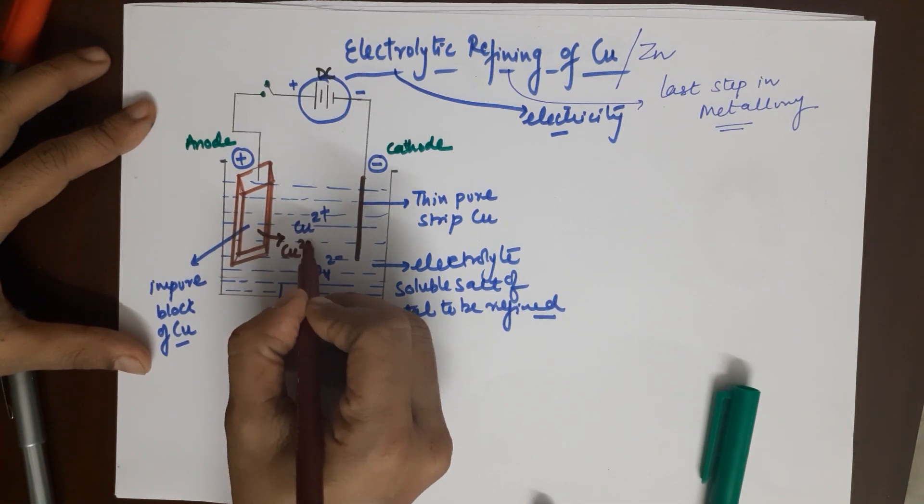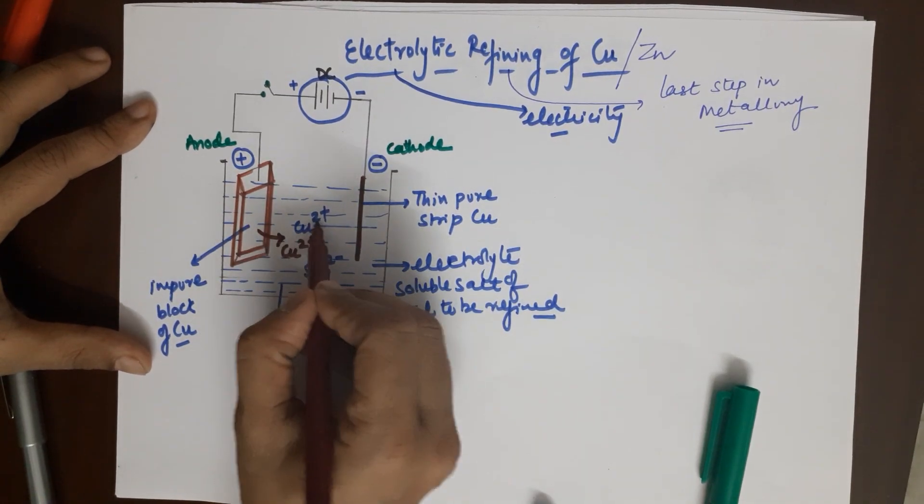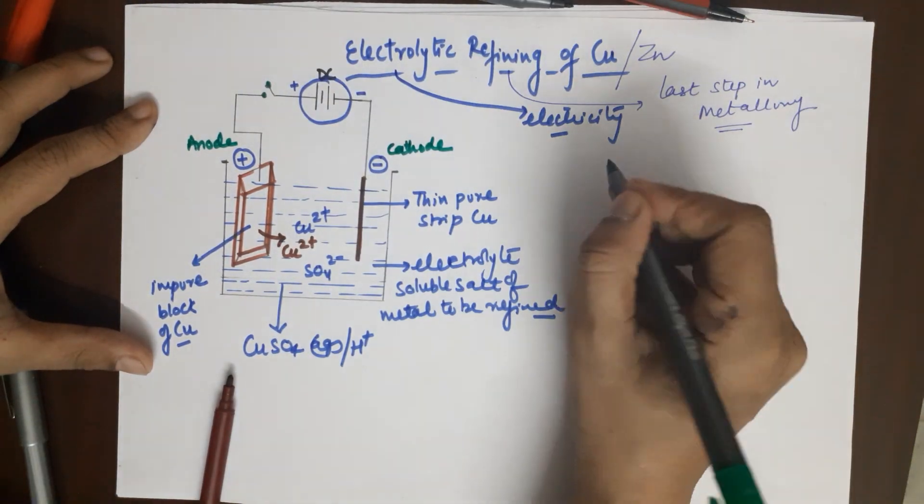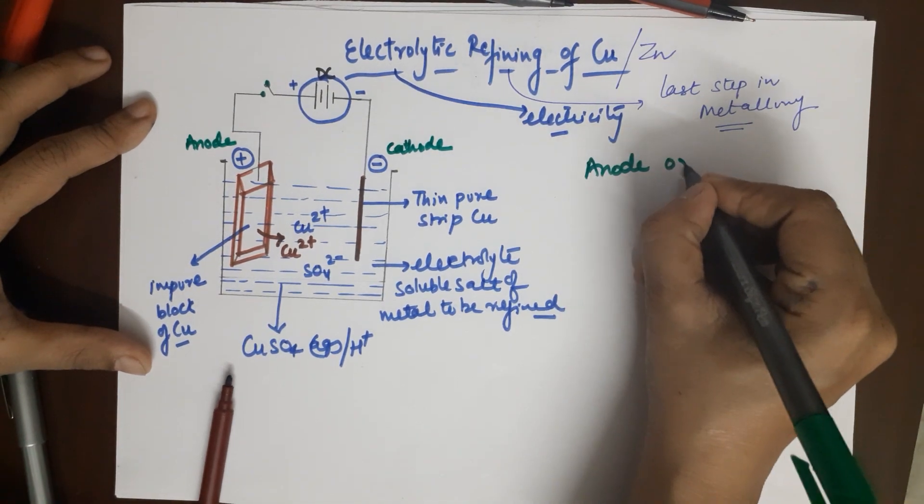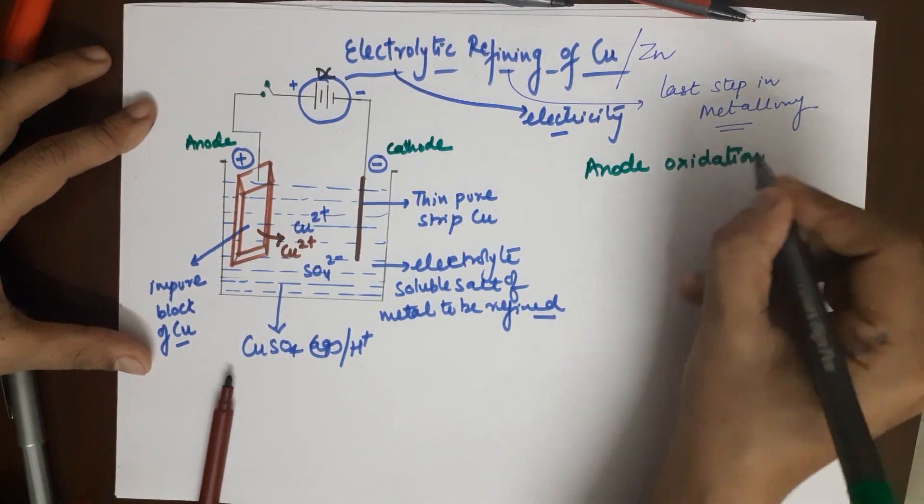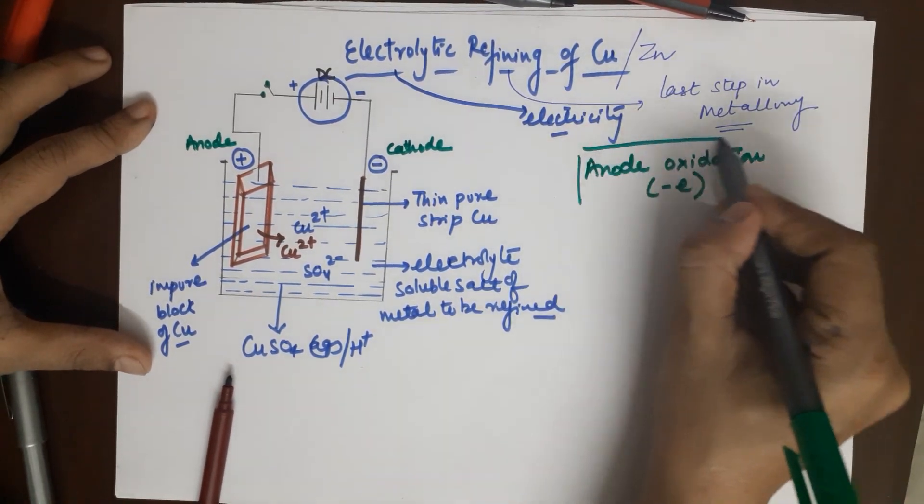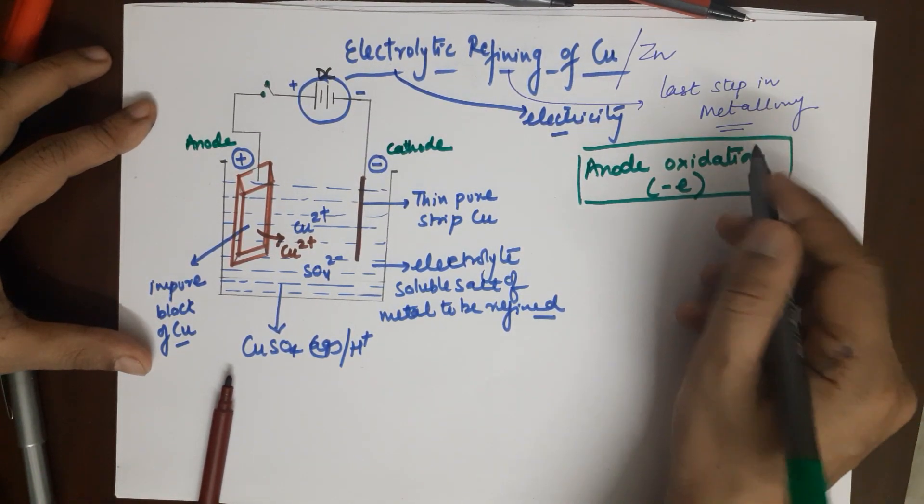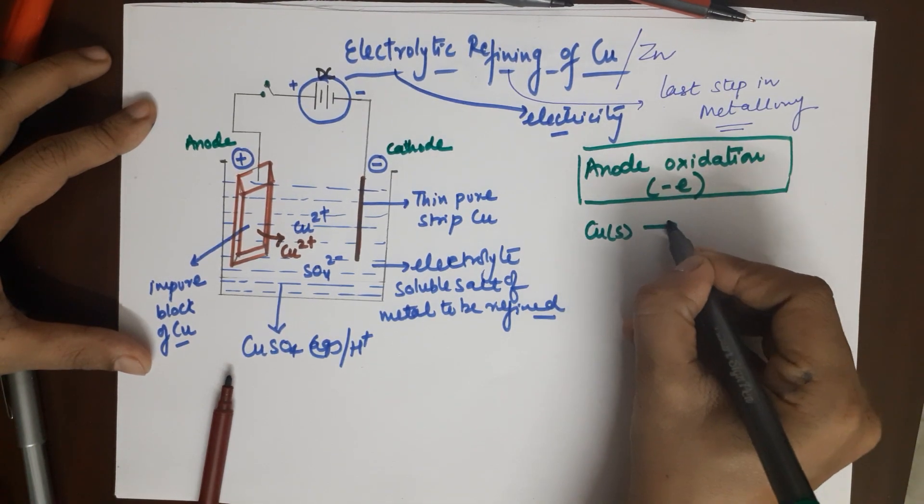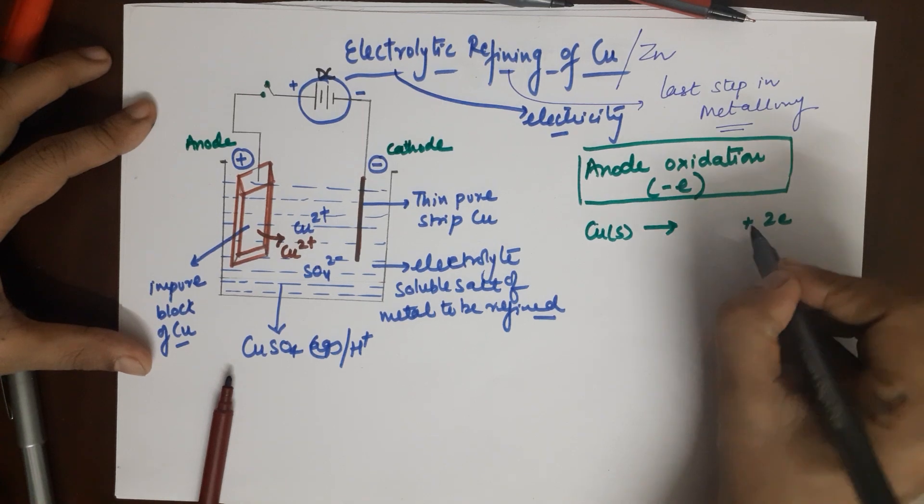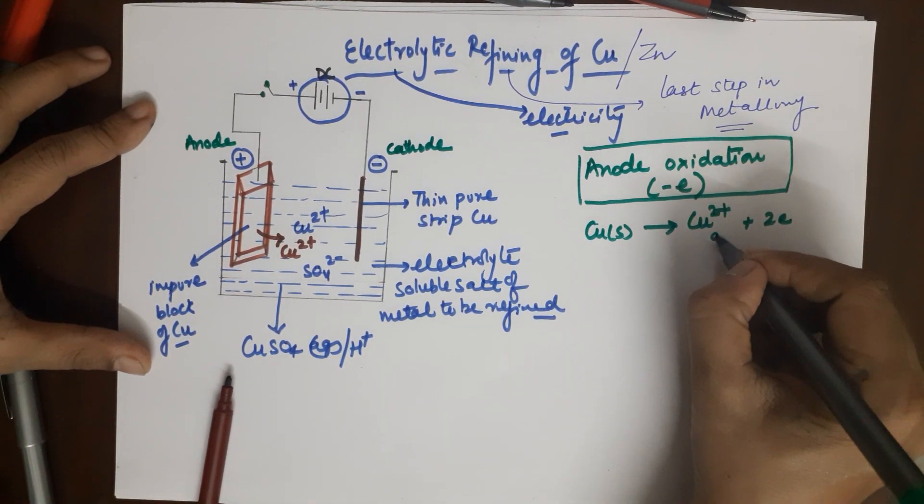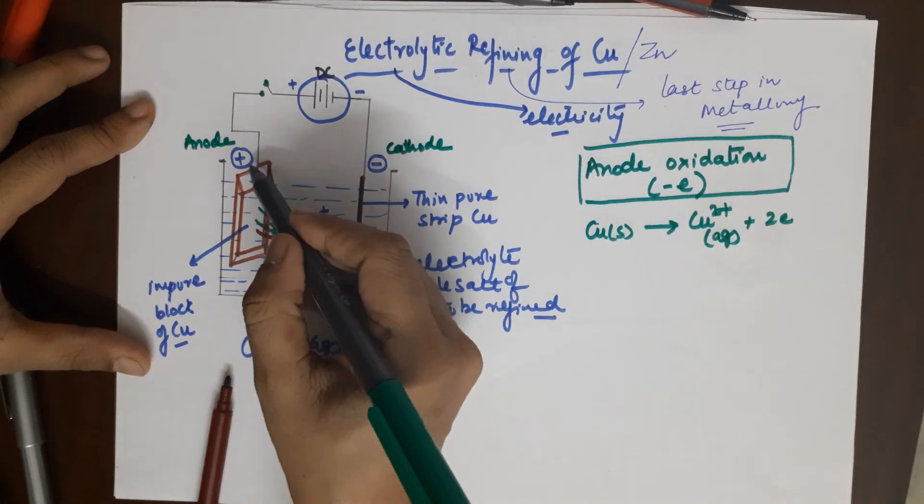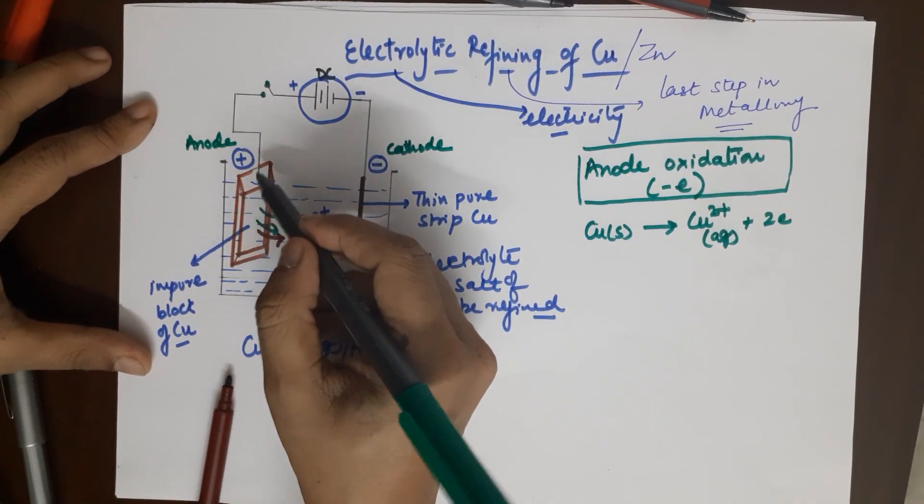The more reactive metals move into the solution by oxidation, which is the reaction that takes place. At the anode you would by default always have oxidation, and oxidation refers to loss of electron. This is something which you should always remember, thumb rule.